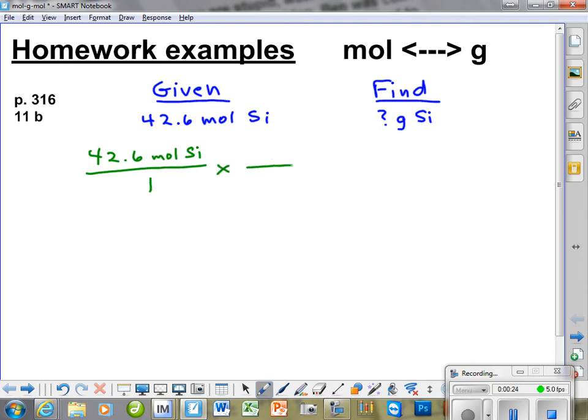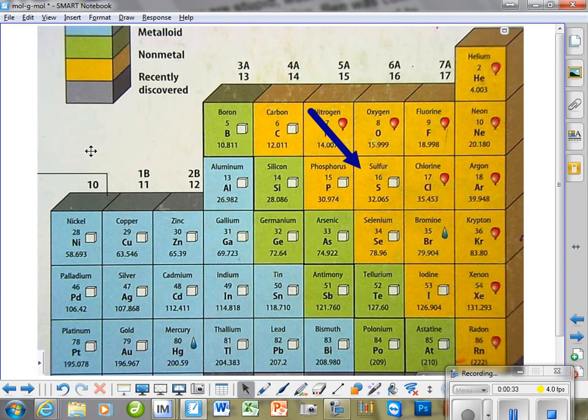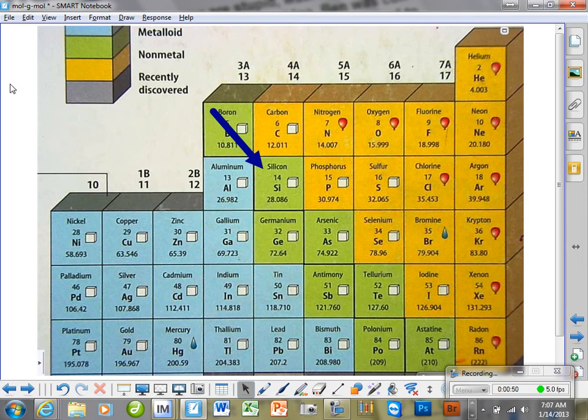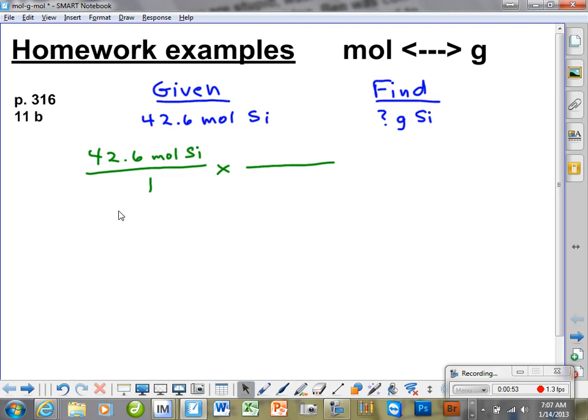Now our next fraction, where are we going to get that ratio? Well, that ratio is going to come by going to the periodic chart. And the periodic chart is going to show us that for silicon, Si is right over here. Silicon is 28.086. Let's just do this to 3 sig figs, so that would be 28.1. 28.1 grams is equal to 1 mole.